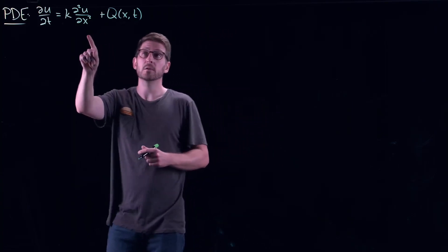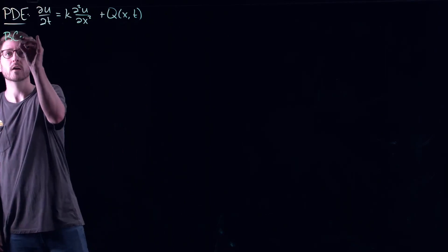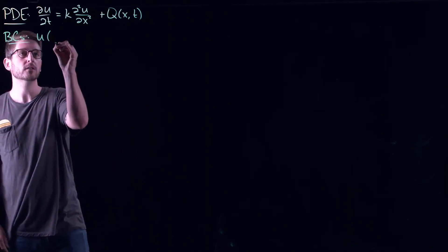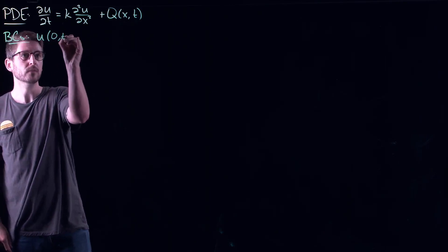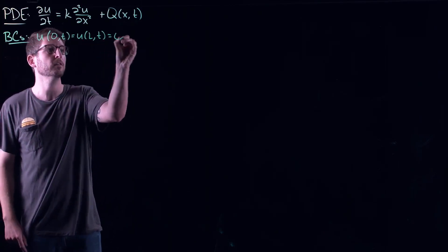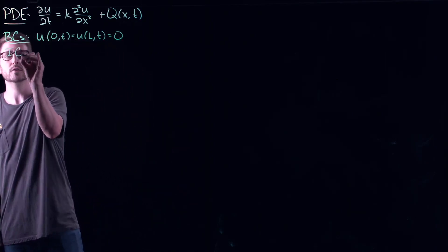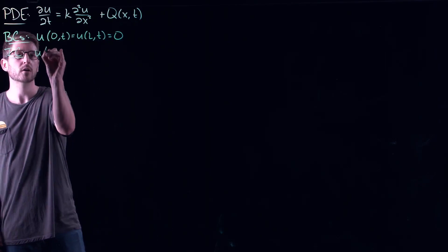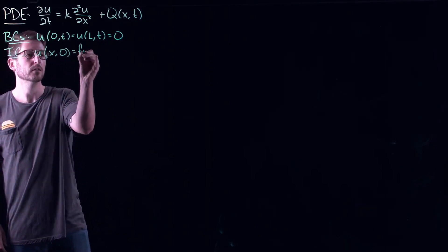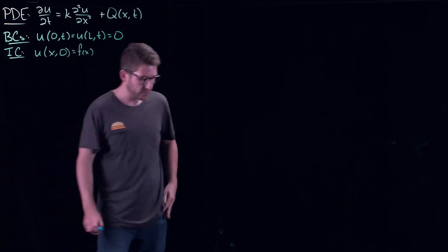This is the PDE that I would like to solve, and here I'm going to put some boundary conditions on it. Let's just use fixed boundary conditions — I'll fix the temperature at either end of the rod to be zero: homogeneous boundary conditions. And of course, we need an initial temperature distribution, which I will just call F. So here's my general setup for my partial differential equation.